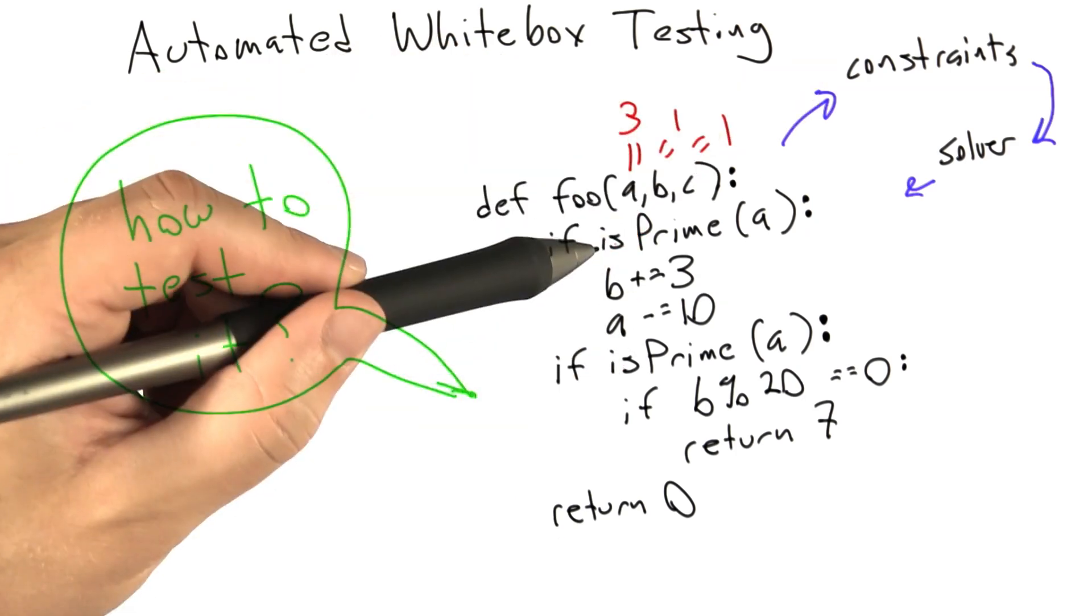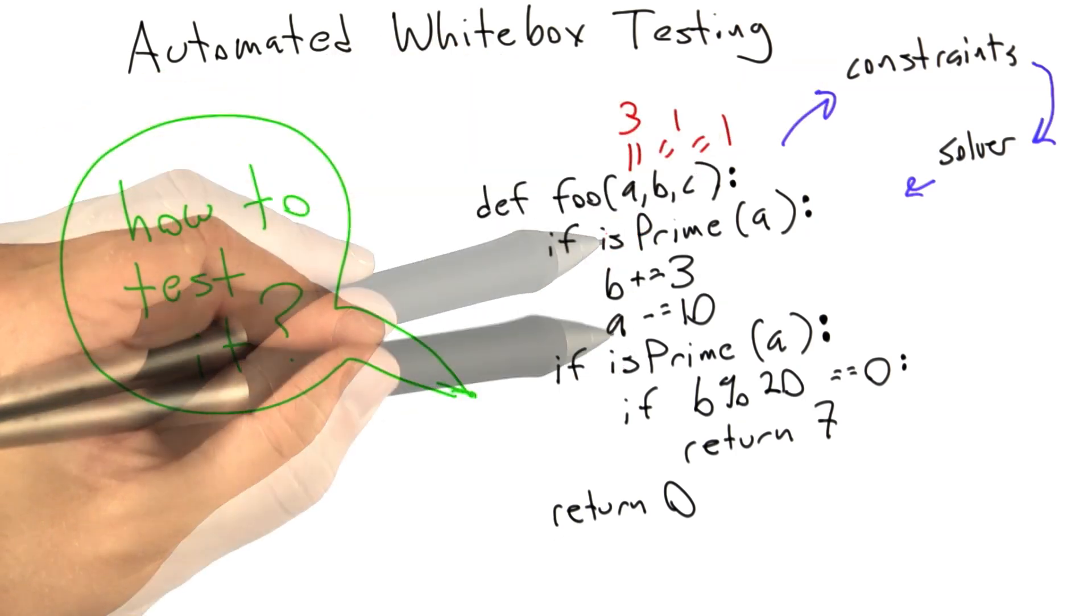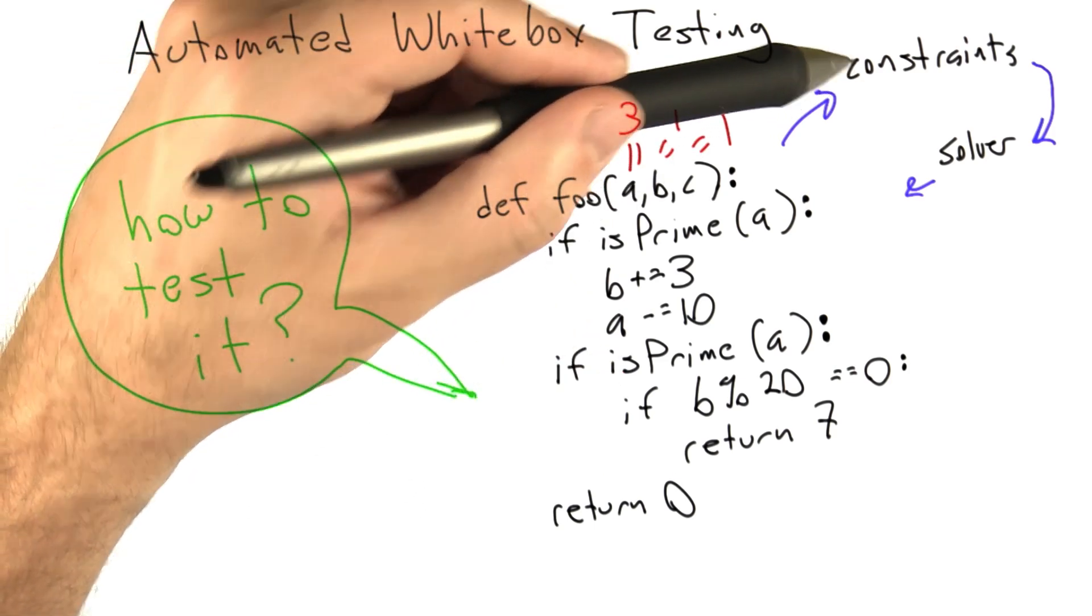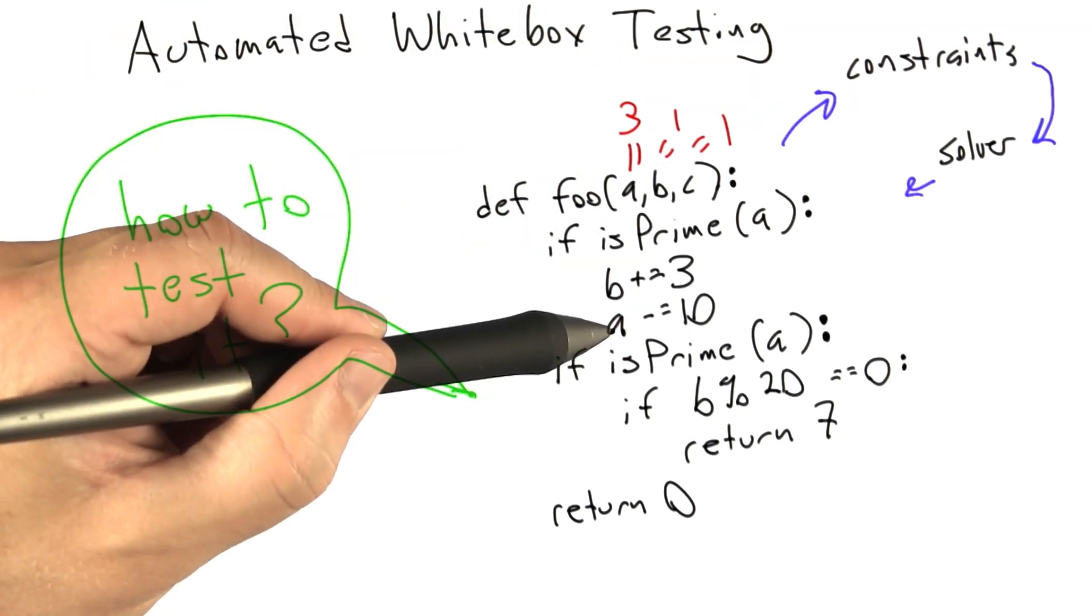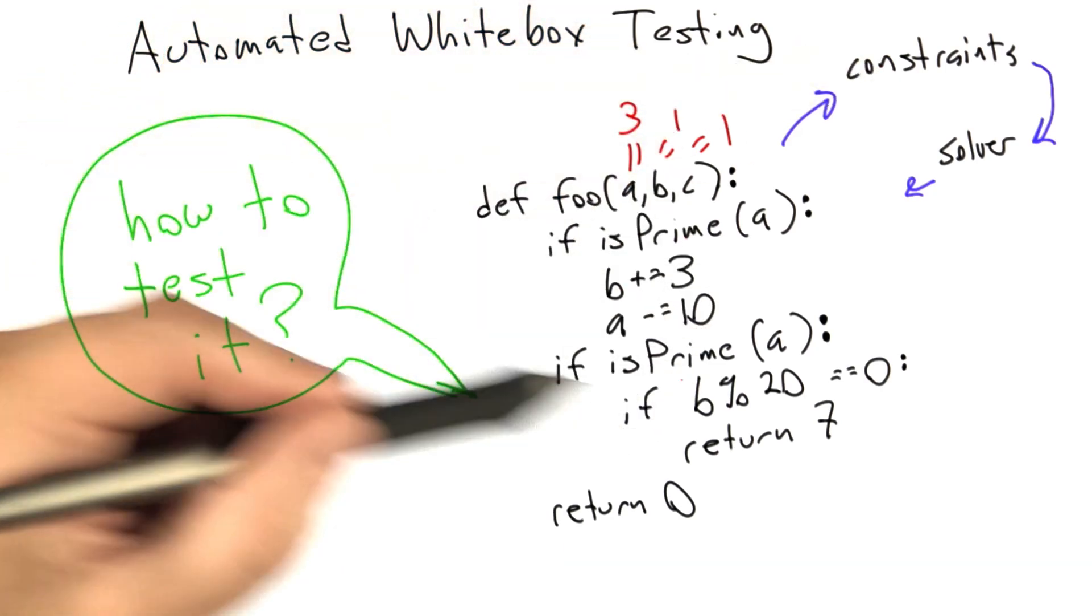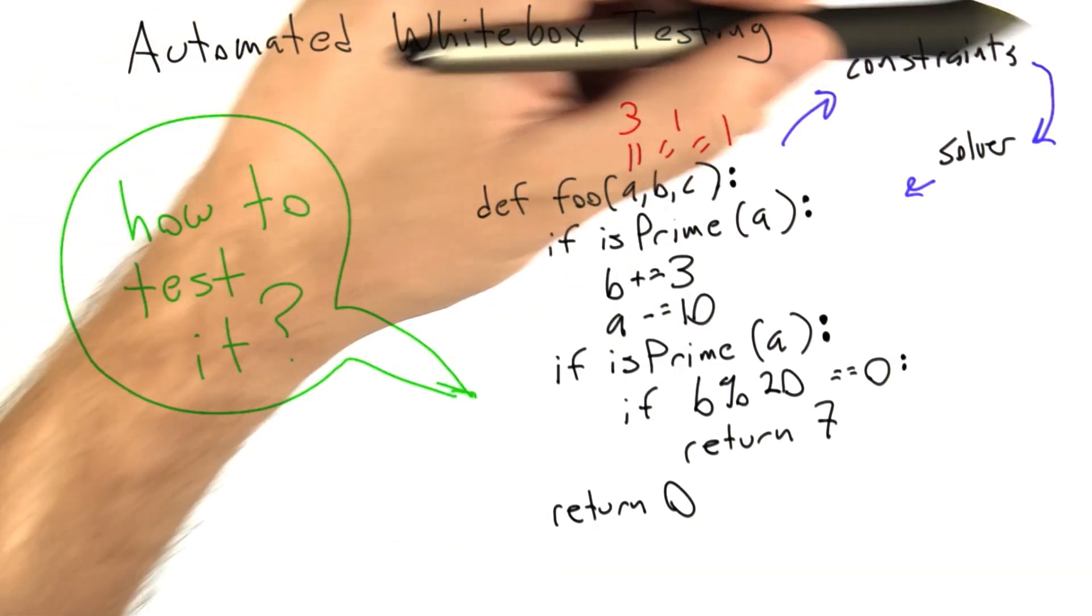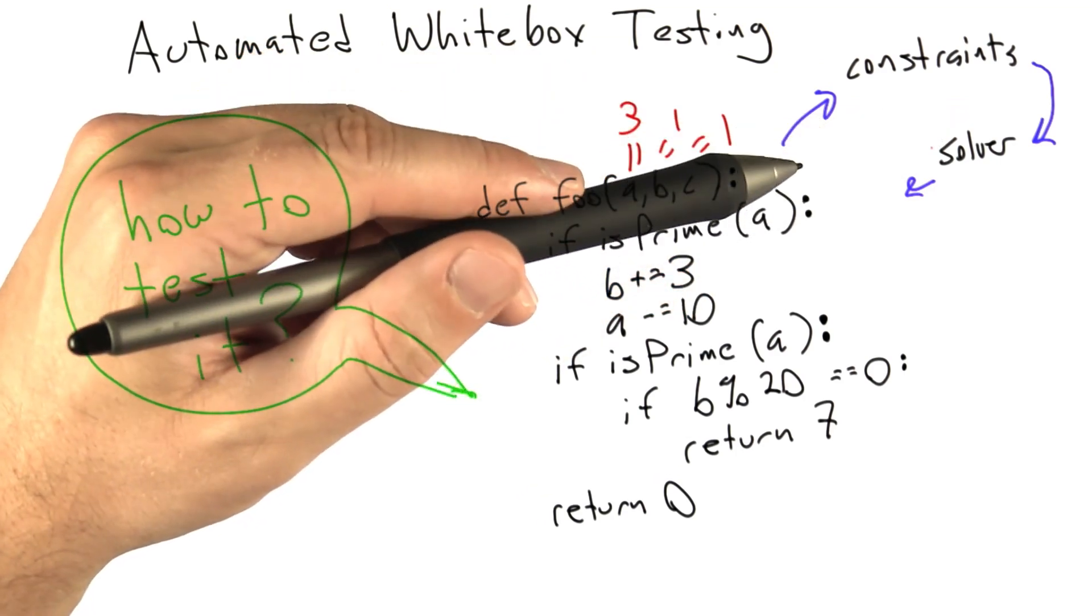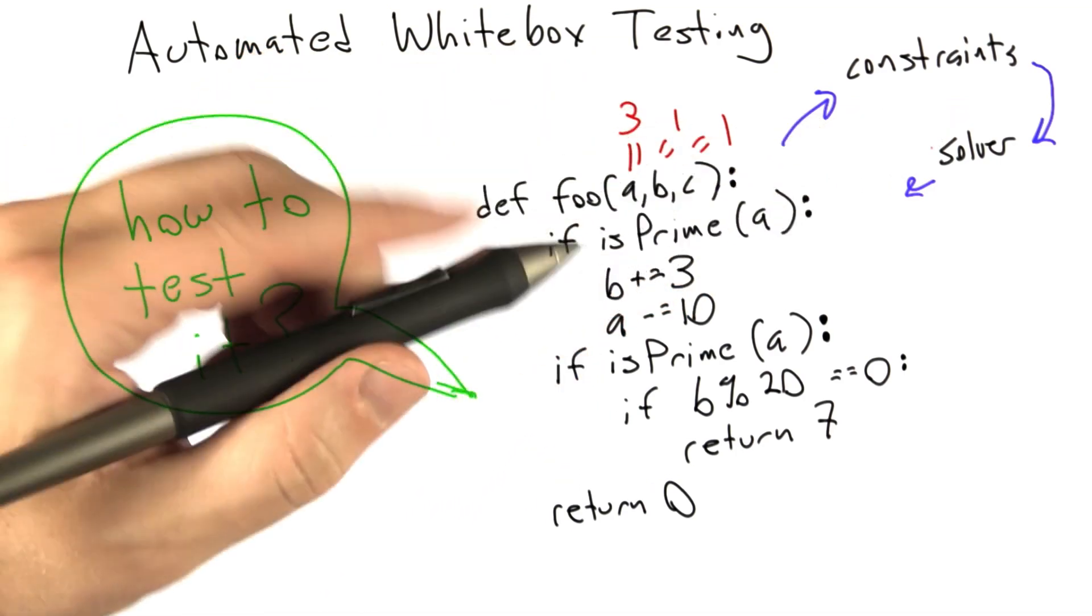It's going to take the first set of constraints, that is the constraints that force A to be prime, and add another set of constraints that force the updated value of A, a value 10 less than the original value of A, to be prime. It's going to turn that into a set of constraints, pass it to the solver, and the solver will either succeed in coming up with a new value of A or possibly fail, but let's assume it succeeds.